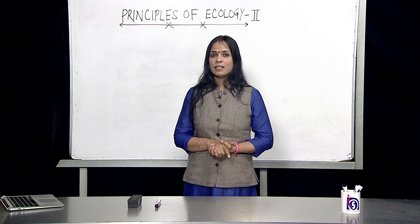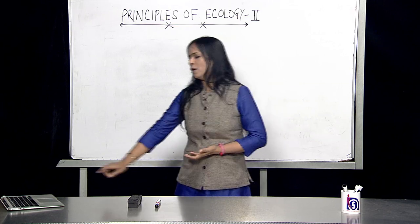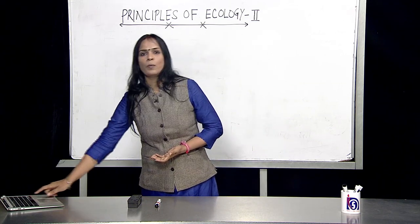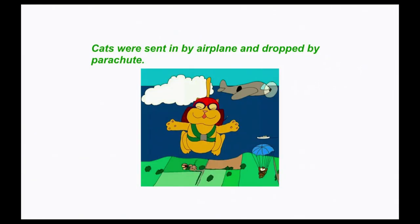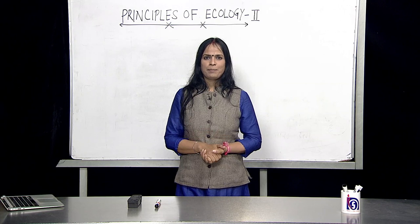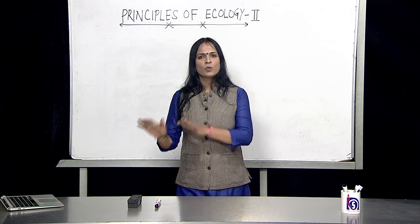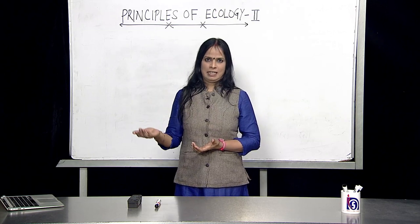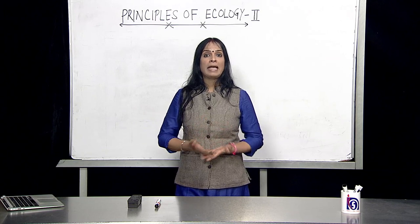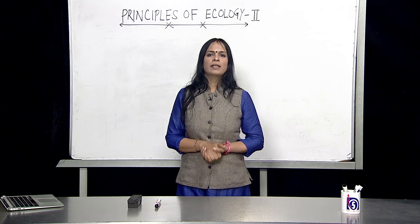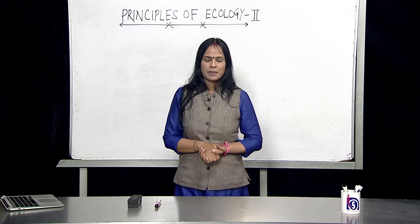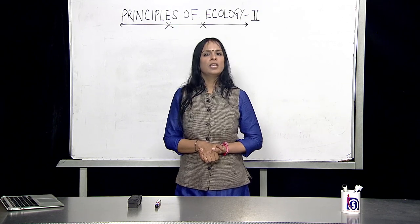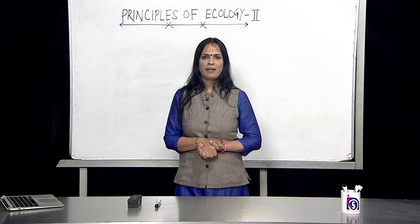We ended at the story where the cats had to be parachuted in a particular place — and I told you it's a real life story. DDT was sprayed to prevent malaria and it ultimately led to a series of events in nature which could have brought plague as a danger to that community. This happened on a small island in Indonesia near Borneo.